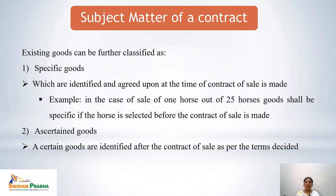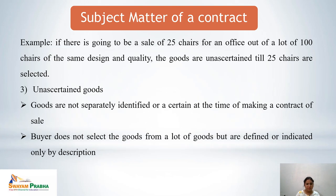Ascertained goods are identified after the contract of sale as per the terms decided. For example, a sale of 25 chairs for an office out of a lot of 100 chairs of the same design and quality — the goods are ascertained once the 25 chairs are selected out of the 100. Unascertained goods are not separately identified at the time of making the contract — the buyer does not select goods out of a lot but they are defined or indicated only by description.